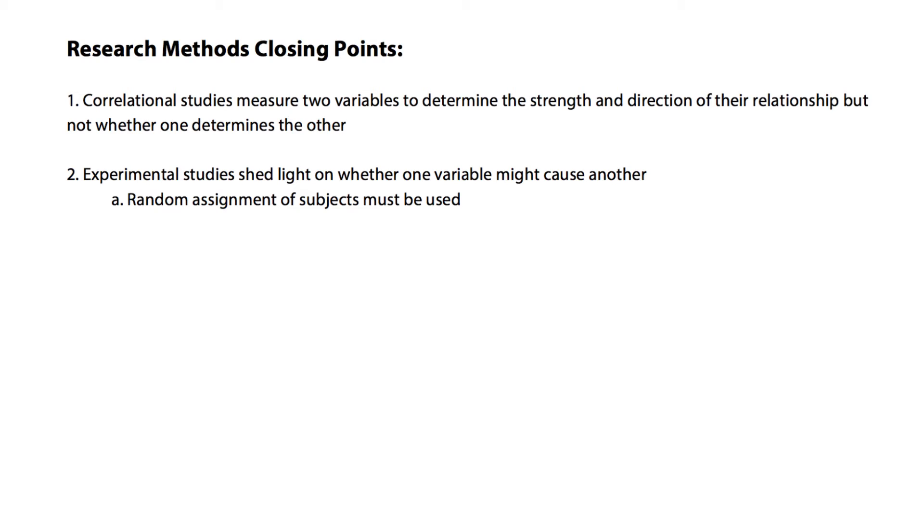By giving two groups different amounts of something, we're manipulating a variable, and this leads to the second condition of an experiment. So the second condition of an experiment is manipulation of an independent variable. And an independent variable, remember, is something that the investigator manipulates. So for instance, the amount of caffeine given.